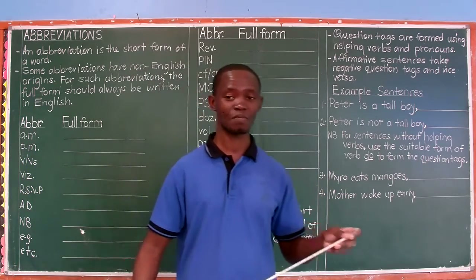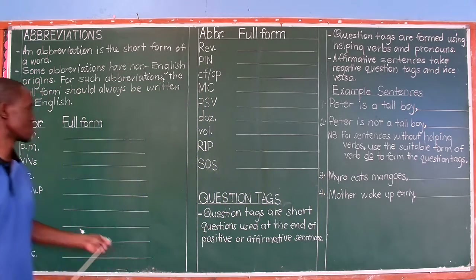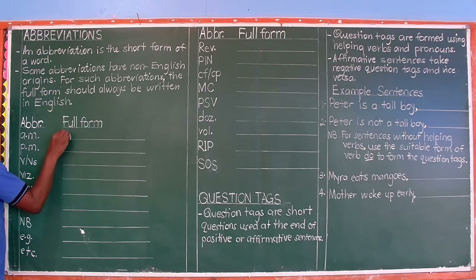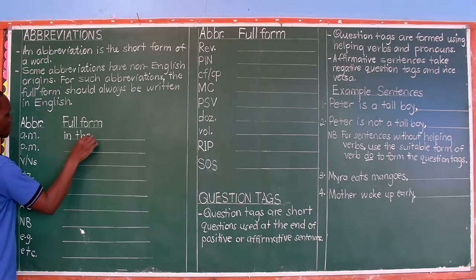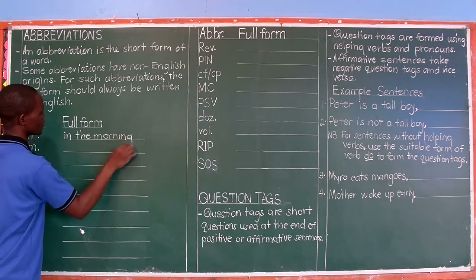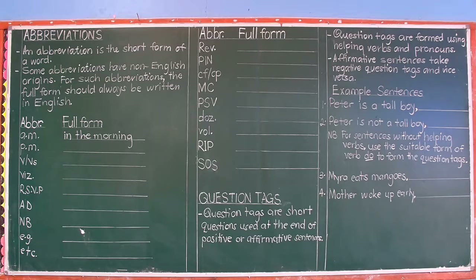Originally, AM was a Latin abbreviation. When it joined English, we coined this meaning. From the Latin 'ante meridiem', the translation into English becomes 'in the morning'. So that is the answer we want — because we teach English, not Latin — and the answer is 'in the morning'.